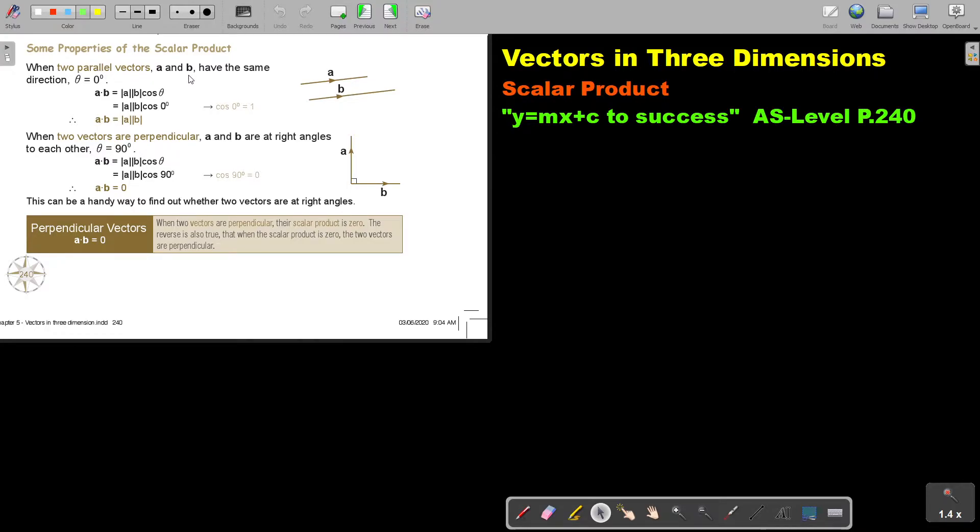Some properties of the scalar product. When two parallel vectors, A and B, have the same direction, beta equals zero degrees. So A.B is going to be, in the place of zero. Now, I always like that you connect work because if you can connect work, it makes it so much easier. So I want to just take you back to trigonometry. Can you remember the cos graph? The cos graph goes like this. Where that is 360, that is 180, and that is zero degrees.